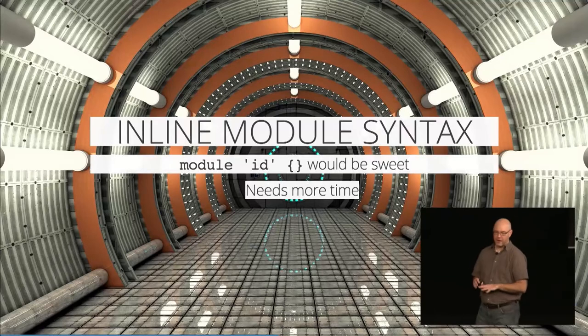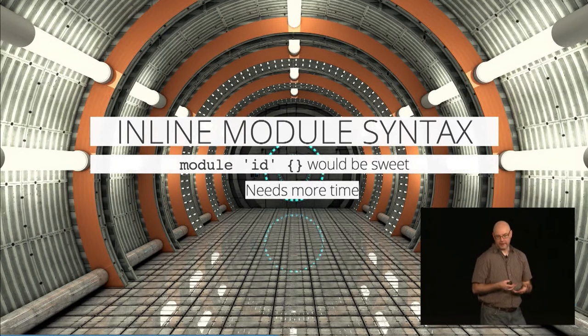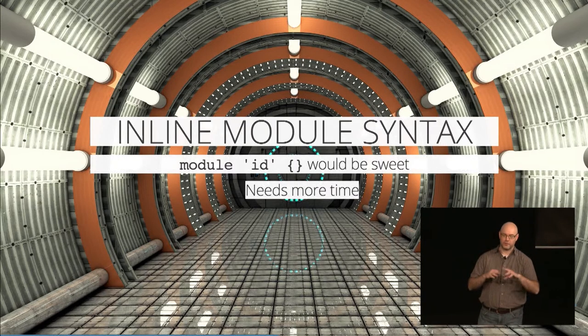The other thing that's not specified yet is inline module syntax — something like a module string ID and then braces and then the module body. That's really useful for concatenation purposes, but it's also nice for when you have a config and want a dynamic test where you set up a named module based on the environment and then start your main loading. It's also useful in mocks, like small test mocks. That may come, but it needs a little bit more time to bake.